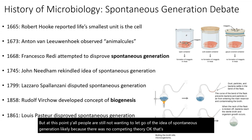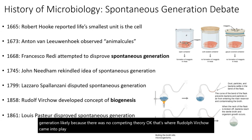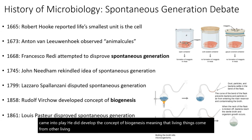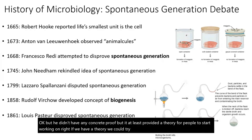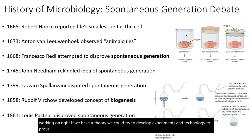That's where Rudolf Virchow came in. He developed the concept of biogenesis, meaning that living things come from other living things. He didn't have concrete proof, but it at least provided a theory for people to start working on. If we have a theory, we can try to develop experiments and technology to prove it. And eventually, not long after, Louis Pasteur officially and completely disproved spontaneous generation.